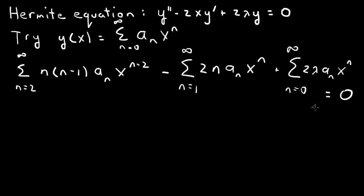To solve this, we need to combine everything into a single power series. We have x^n here, x^n here, and x^(n-2) here. So we need to shift the first index down by 2 to raise it to x^n. Then we start from n=0. The second sum can also start from n=0 since it's multiplied by n.